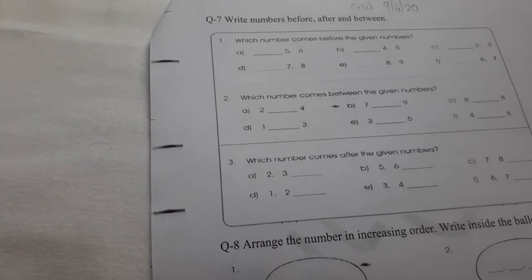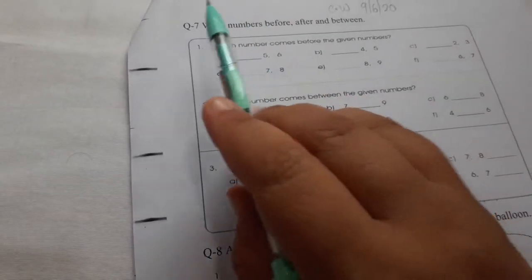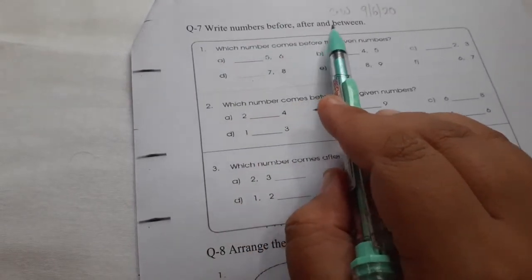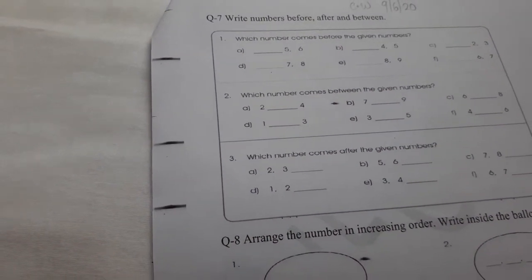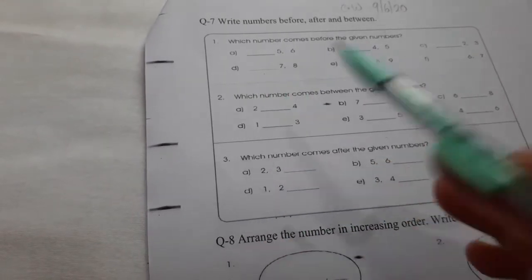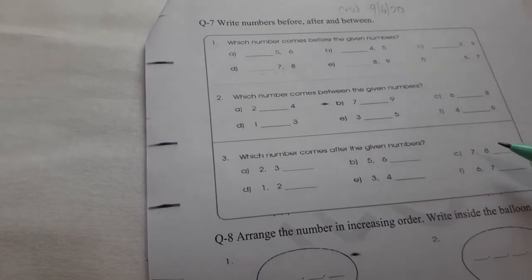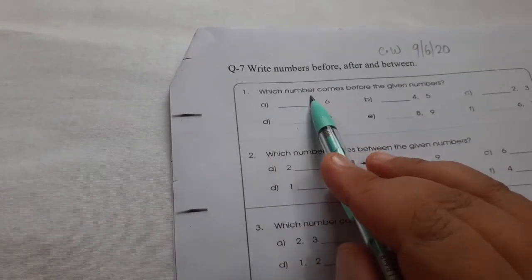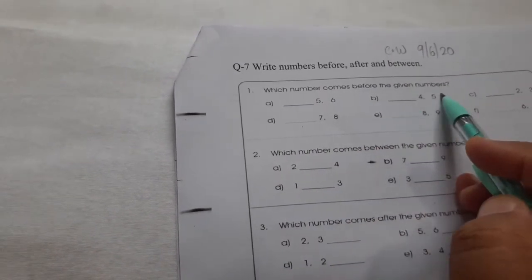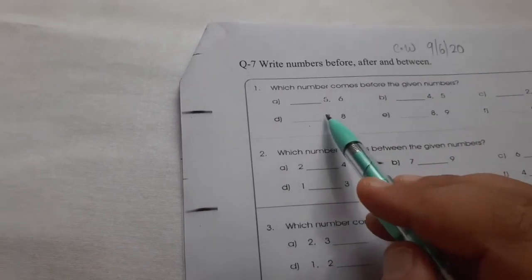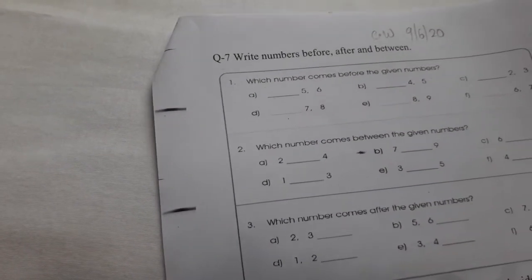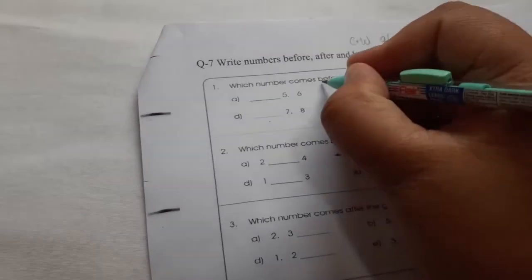Then question is question number 7, write numbers before, after and between. What you have to do? You have to write before numbers, after numbers and between numbers. Let us see question number 1. Which number comes before the given numbers? Before means... underline before over here.